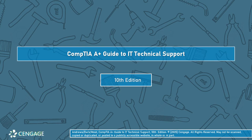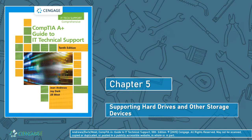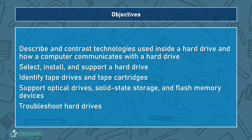Mr. Armke back with you for CTS 120. We are here today for Chapter 5, Supporting Hard Drives and Other Storage Devices. Our objectives for today are to talk about technologies used inside of a hard drive and how a computer communicates with that hard drive. We'll look at how to install and support a hard disk, how to identify tape drives and tape cartridges, magnetic tape, how to support optical drives, solid state storage, and flash memory. We're also going to look at a little bit of troubleshooting.